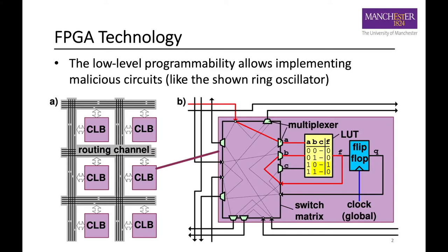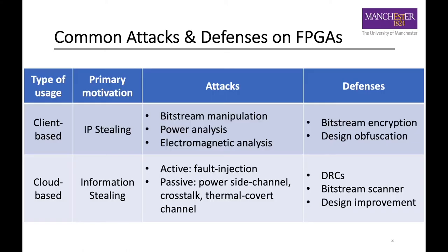That is why we could exploit it to sense the state of nearby circuits. Here are common attacks and defenses on FPGAs. For client-based uses, the main motivation is to steal the design loaded on the FPGA. This can be done through bitstream manipulation, power analysis, or electromagnetic analysis. To protect it, we could use bitstream encryption or obfuscation. For cloud-based uses, the target is the data being processed by the board. This can be done either actively using fault injection or passively using side-channel attacks. Currently, countermeasures are design rule checks, bitstream scanners, and design improvements.